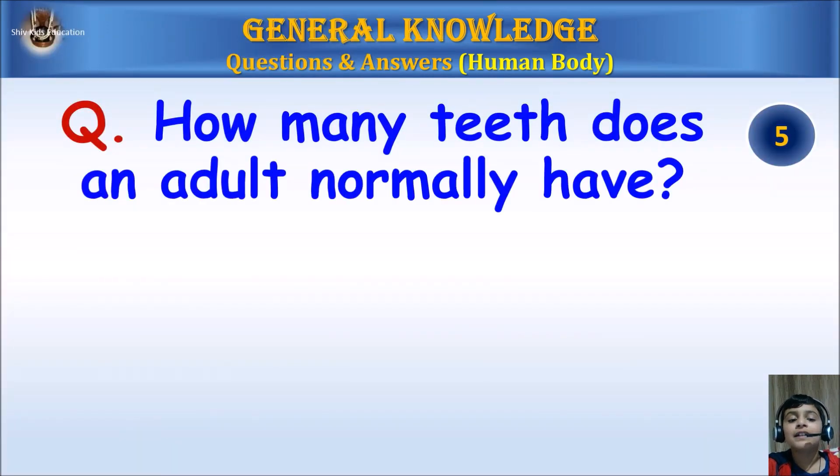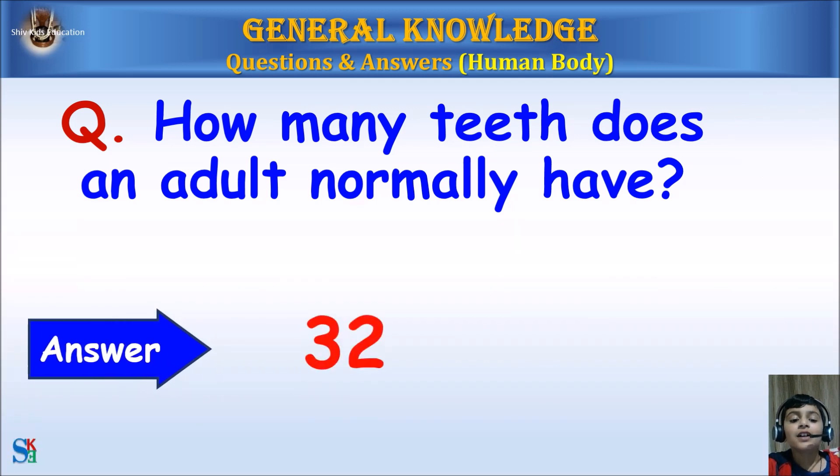How many teeth does an adult normally have? Answer: 32.